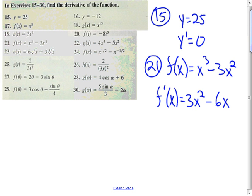Number 23. Before we take the derivative on number 23, it'd be a good idea to rewrite this with some fractional exponents so we could use the power rule. So I can rewrite that as 6x to the one-half minus 3x to the one-third, using the fractional exponent rule.